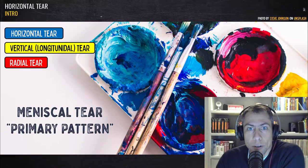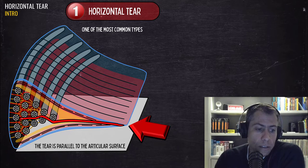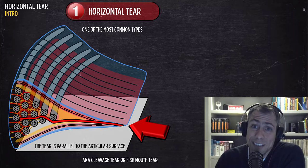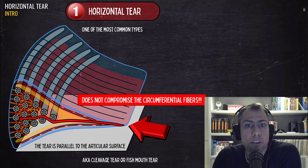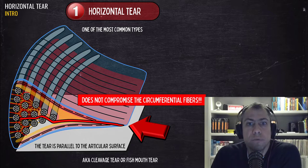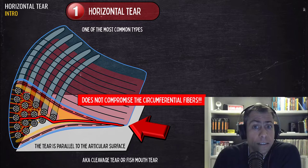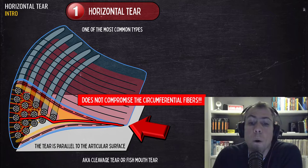The horizontal meniscal tear is one of the most common types. The tear is parallel to the articular surface, which is why it's also known as the cleavage tear or the fish mouth tear. The good news about this type of tear is that it does not compromise the circumferential fibers, which are very important for maintaining meniscal function — specifically the hoop stress. That's the good thing about the horizontal tear.